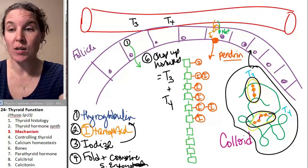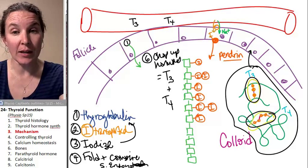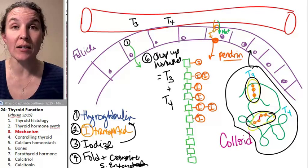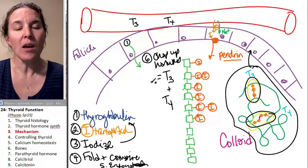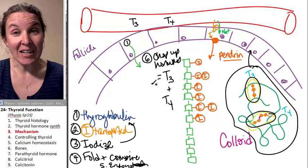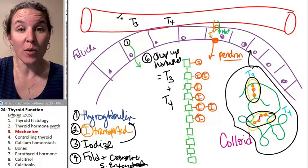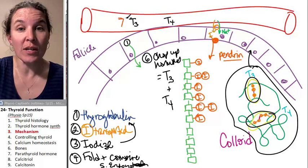Once T3 and T4 are dumped into the blood, they can go off and have an effect on target cells. T3 is the active version of the thyroid hormone. This is the hormone that does something.